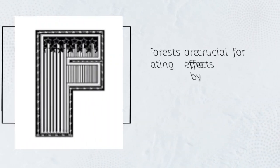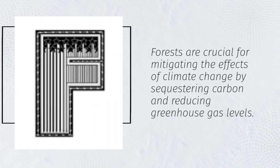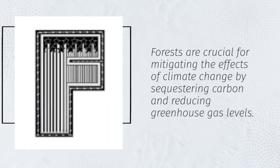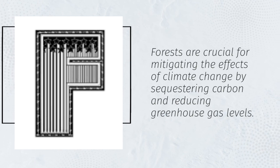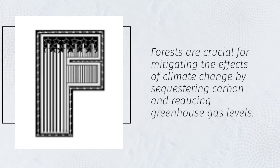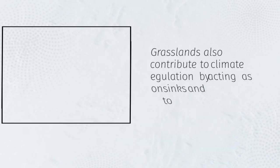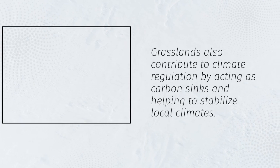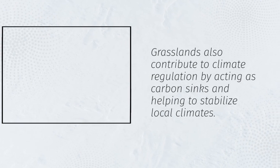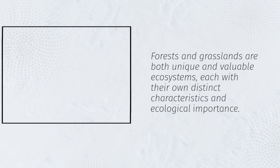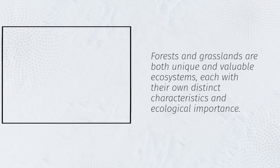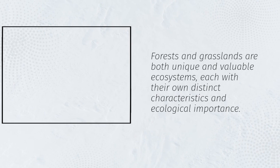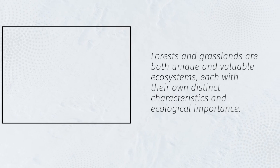Forests are crucial for mitigating the effects of climate change by sequestering carbon and reducing greenhouse gas levels. Grasslands also contribute to climate regulation by acting as carbon sinks and helping to stabilize local climates. Forests and grasslands are both unique and valuable ecosystems, each with their own distinct characteristics and ecological importance.